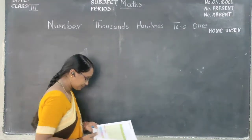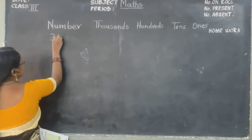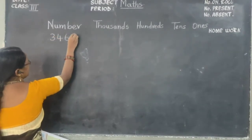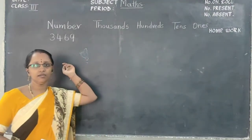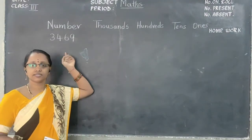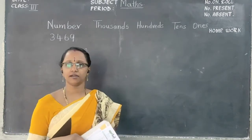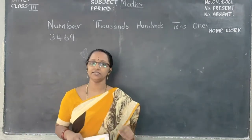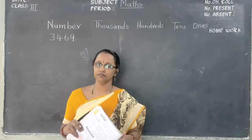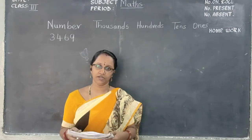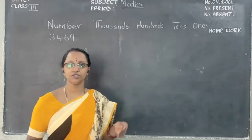Now let's see children. We are going to see the first one: 3, 4, 6, 9. Did you remember? In the last class you have learned ones, tens, hundreds, thousands, ten thousands and so on. So now here also we are going to learn that.